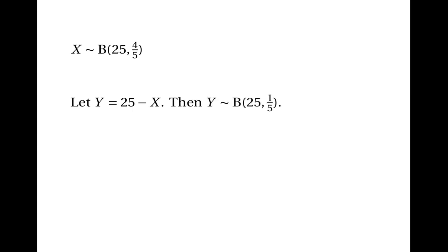We can use the tables to calculate probabilities for this distribution. But there's a little problem because the probability of success is greater than a half. Remember that in this situation, we need to think about the number of failures instead of the number of successes. So let's say that y is 25 minus x, so that it equals the number of failures. Y will have the binomial distribution with 25 trials and 1/5 as the probability. The question was asking for the probability that x is greater than 20, and this will be equal to the probability that y is less than 5, which is the same as the probability that y is less than or equal to 4.